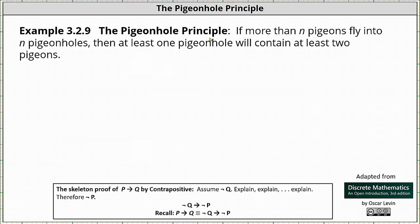Notice the pigeonhole principle is an implication in the form of if P then Q, where the statement P is more than n pigeons fly into n pigeonholes, and the statement Q is at least one pigeonhole will contain at least two pigeons.